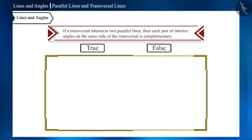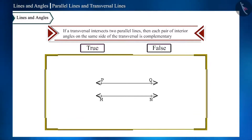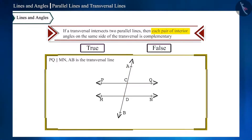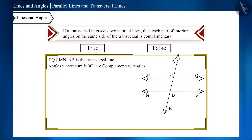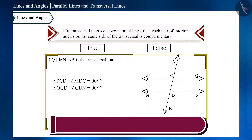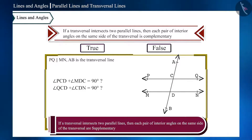Let's understand this with a figure. PQ and MN are two parallel lines and transversal AB intersects them at C and D. Interior angles on the same side of the transversal — angle PCD, angle MDC, angle QCD, and angle CDN — are sometimes incorrectly called complementary angles. But complementary means the sum is 90 degrees. By the theorem, these interior angles are supplementary (sum is 180 degrees), not complementary. So that statement is false.